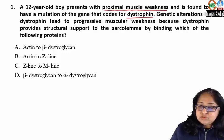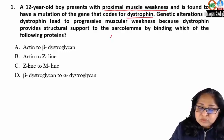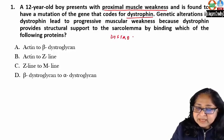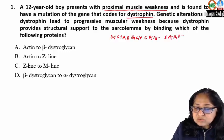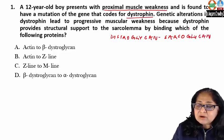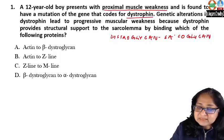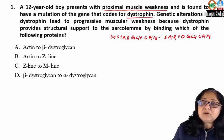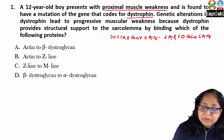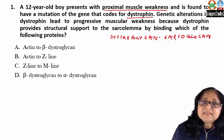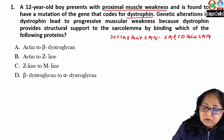Dystrophin is a part of what is known as the dystroglycan-sarcoglycan complex, also known as sarcolemma proteins. Let's look at the organization of these sarcolemma proteins.